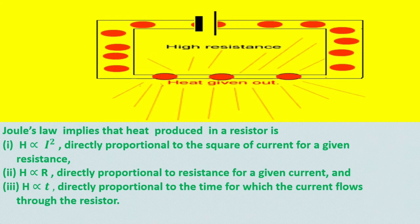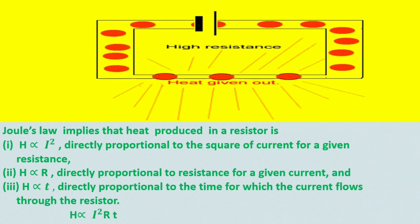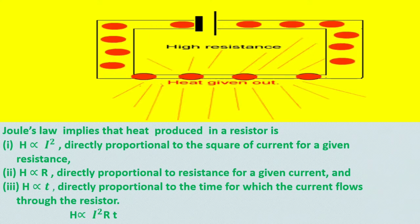To sum up, the heat produced in the resistor is directly proportional to the product of the square of the current, resistance, and time.